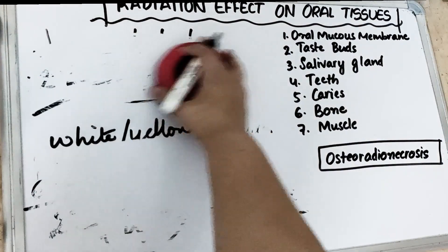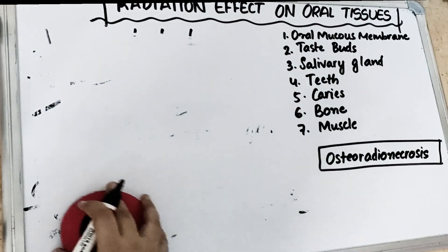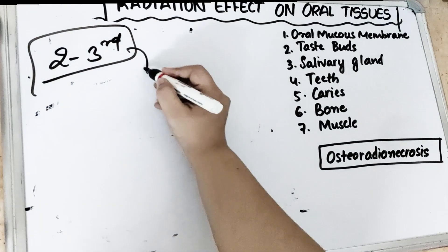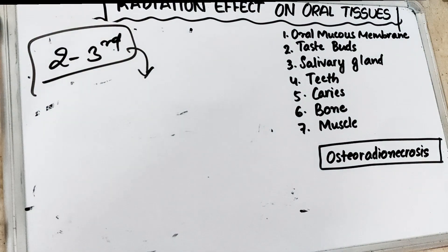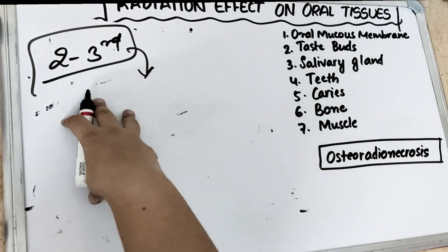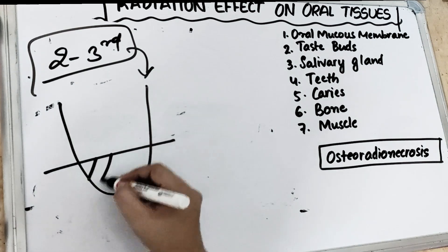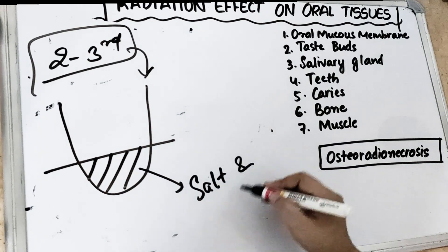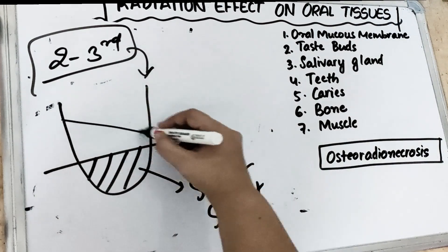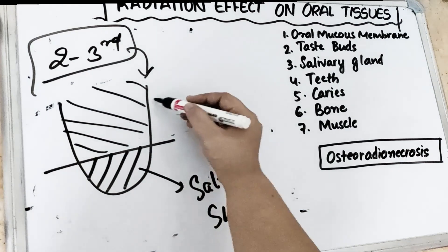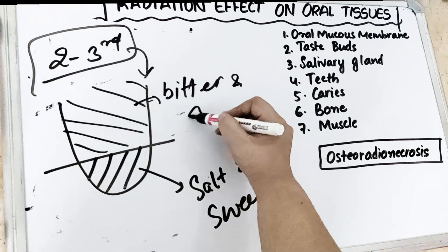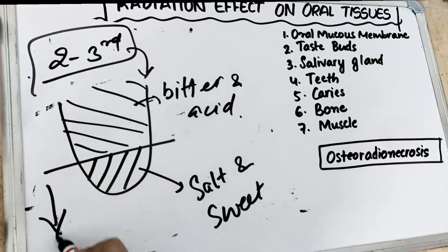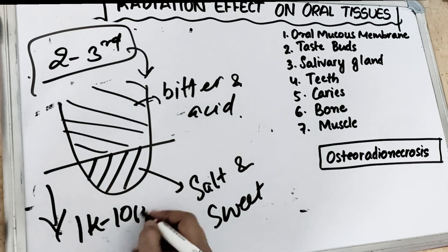Taste buds are also sensitive to radiation, and there is going to be loss of taste, which usually starts from the second to third week of radiotherapy. If the anterior one-third of the tongue is irradiated, the patient loses the sensation of salt — there is altered salt and sweet sensation. If the posterior two-thirds of the tongue is irradiated, there is loss of bitter and acid flavor sensation. Taste buds decrease in number — up to 1,000 to 10,000 taste buds can be lost.